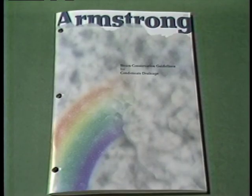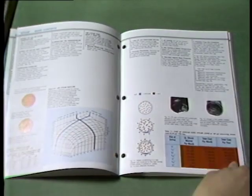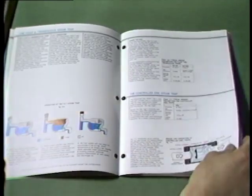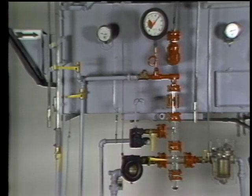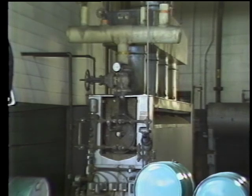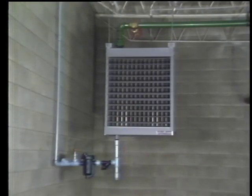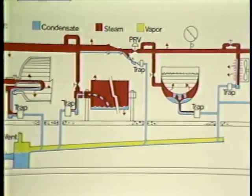The Armstrong manual M101 titled Steam Conservation Guidelines for Condensate Drainage is an extremely valuable reference book. It contains the guidelines outlined in this program and many others as well. Your facility's steam system is one of your most important tools. It makes sense to see that it operates as efficiently as possible. By following the guidelines we've outlined, you can hold energy, maintenance, and operational costs to a minimum and enjoy the benefits of an efficient, dependable system.